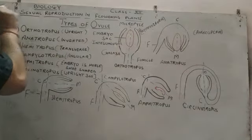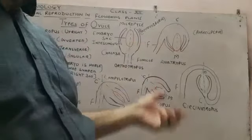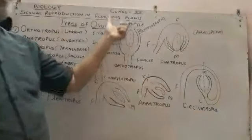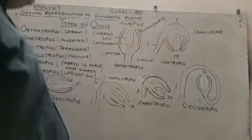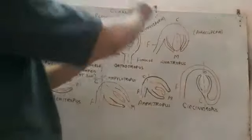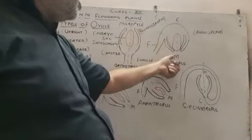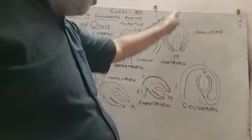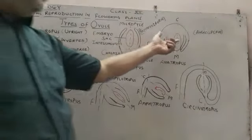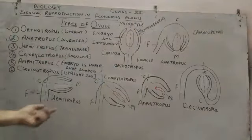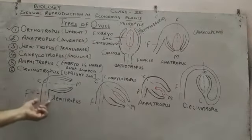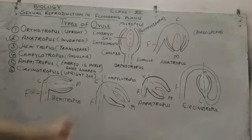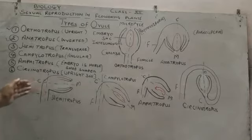Anatropous is mostly found in angiosperms. In anatropous, the micropyle is inverted. The micropyle and the funicle run alongside each other. In hemitropous, the body and the funicle are at a transverse or right angle orientation.